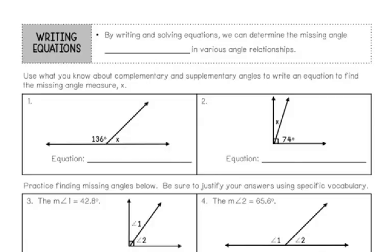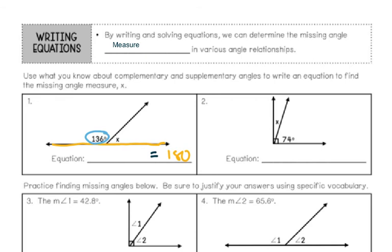Now that we have reviewed the different types of angles, let's get into writing the equations. By writing and solving equations, we can determine the missing angle measure in various angle relationships. It says to use what we know about complementary and supplementary angles to write an equation to find the missing angle measure X. Since this angle is a straight line, I know it is supplementary and needs to equal 180 degrees. So I'm going to take 136 and add X, and both of those need to add up to be 180.